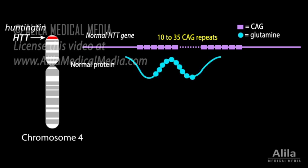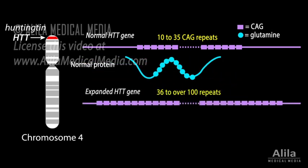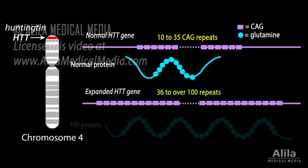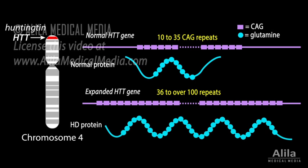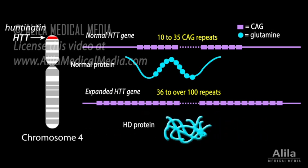In people with HD, the HTT gene has more than 36 CAG repeats. The abnormally long stretch of polyglutamine alters the structure of HTT protein, causing fragmentation and aggregation, forming a misfolded protein that is toxic to nerve cells.